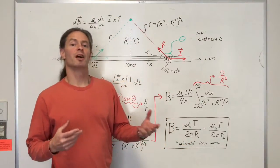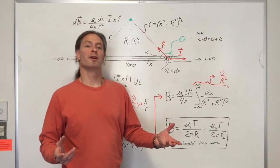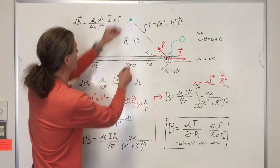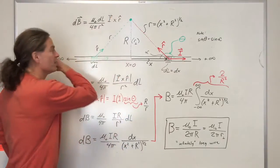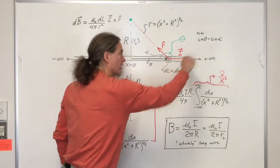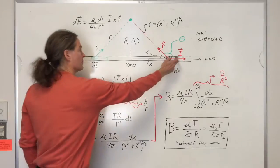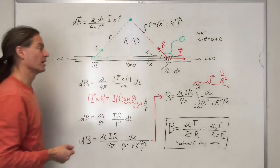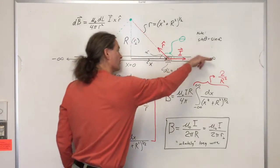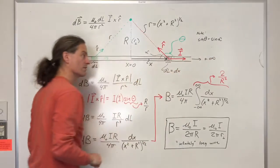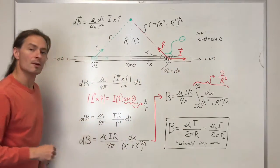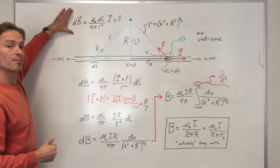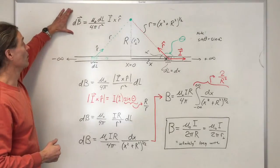In this video I'm going to derive an expression for the magnetic field a distance capital R from an infinitely long wire carrying a current capital I. For the purpose of our calculation, we'll take the current to be flowing in the positive x direction. To do this we're going to utilize the Biot-Savart law.